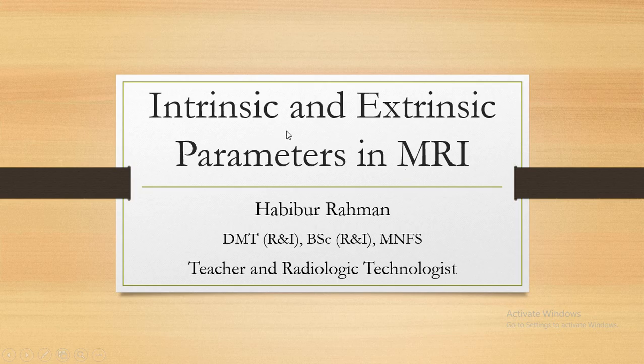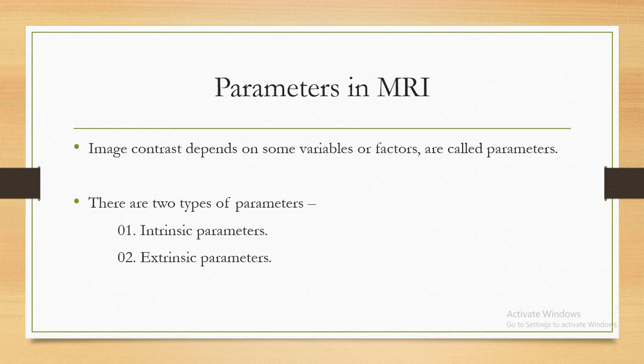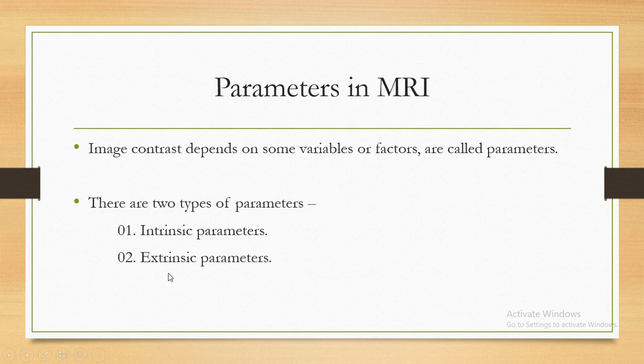MRI intrinsic parameters and extrinsic parameters. The image contrast depends on some variables or factors called parameters. In MRI, there are two types of parameters: intrinsic and extrinsic parameters.